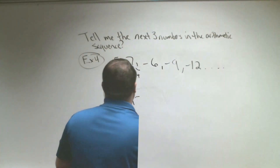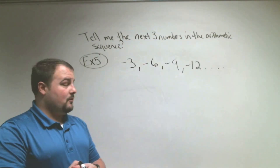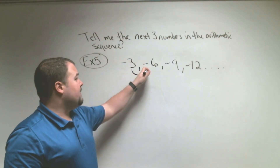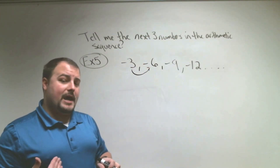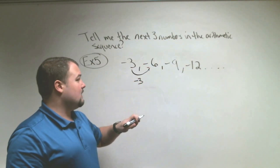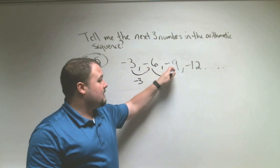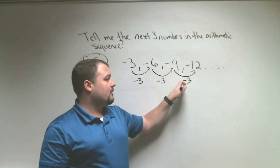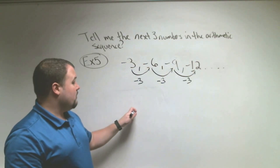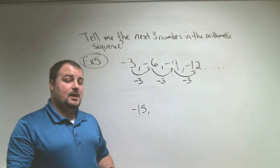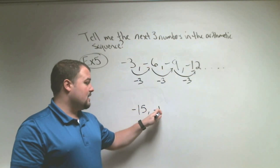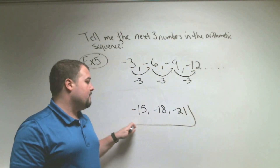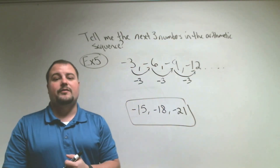Let's do one more. In example 5, we're still telling the next three numbers of the arithmetic sequence. To go from negative 3 to negative 6, you subtract 3. From negative 6 to negative 9, subtract 3. From negative 9 to negative 12, subtract 3. So negative 12 minus 3 is negative 15, negative 15 minus 3 is negative 18, and negative 18 minus 3 is negative 21. These are the next three numbers of the sequence.